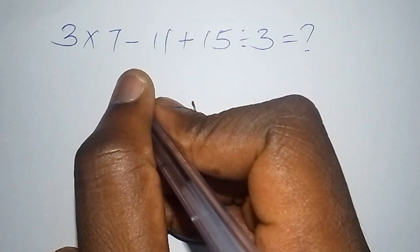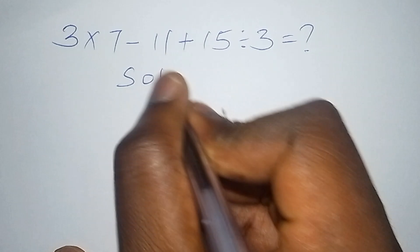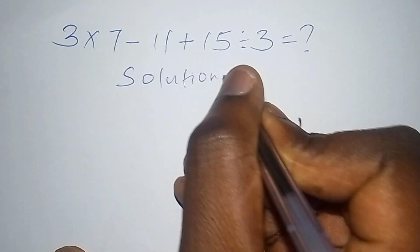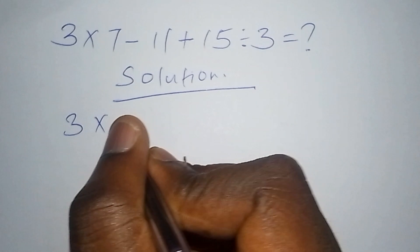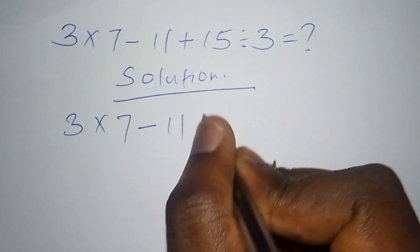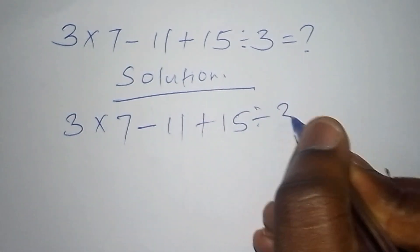Let us begin with the solution. Under the solution here, this is what you want to solve. We want to solve 3 times 7 minus 11 plus 15 divided by 3.